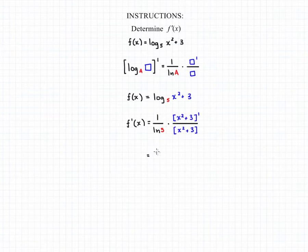If we work out that derivative, we're going to end up with 1 over the natural log of 5 times 2x over x squared plus 3.